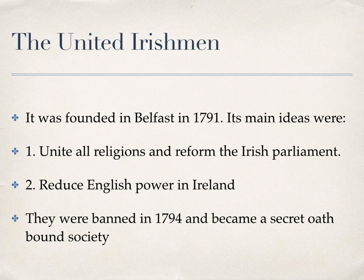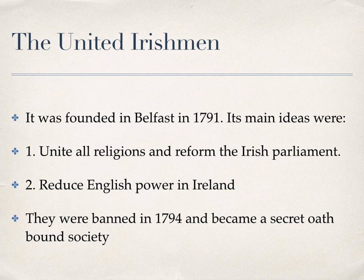The United Irishmen was founded in Belfast in 1791. The main ideas were to unite all the religions, reform the Irish Parliament, and reduce English power in Ireland. At the beginning they didn't want to set up a Republic or separate Ireland from England — they just wanted fairer conditions. In 1794 they were banned and became a secret oath-bound society, because Britain had entered war with France and was paranoid about organisations moving away from England. Pushed underground, they became more radical, now wanting a Republic and a rebellion.